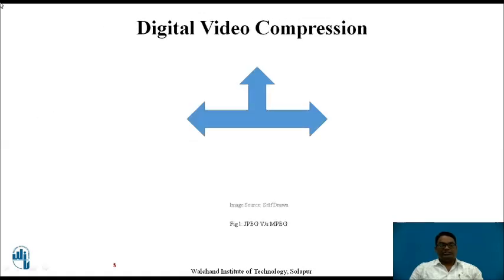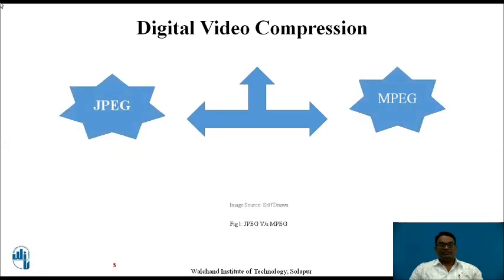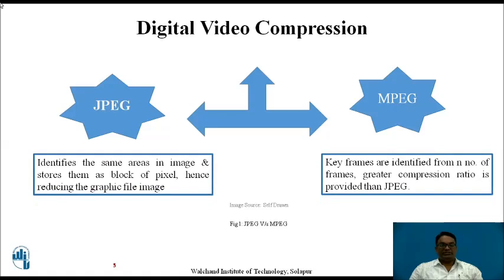Digital video compression is done by using two methods or two standards — JPEG and MPEG. In JPEG, digital video compression is done by first identifying the same areas in an image, and then these are stored in the form of pixels, which reduces the graphic file image.